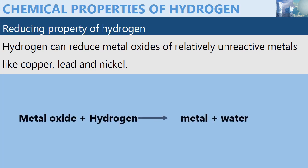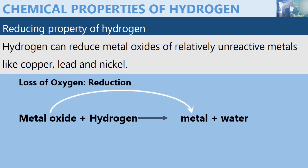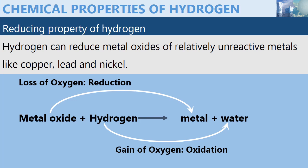This equation gives us an idea of what really happens. A metal oxide plus hydrogen gives us a metal plus water. The metal loses oxygen, which means it undergoes reduction, while hydrogen gains the oxygen to form water, which means it undergoes oxidation.